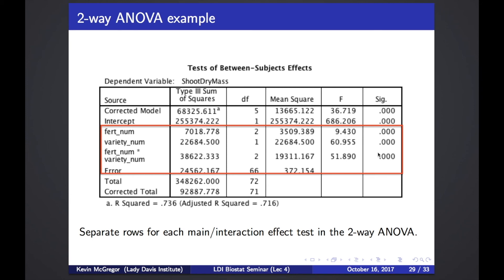Regarding procedure: you always start by doing the ANOVA. If the ANOVA is significant, you then go ahead and perform your post hoc tests — comparing A vs. B, B vs. C, and A vs. C. If the ANOVA is not significant, you would usually just stop there and not do the further tests.